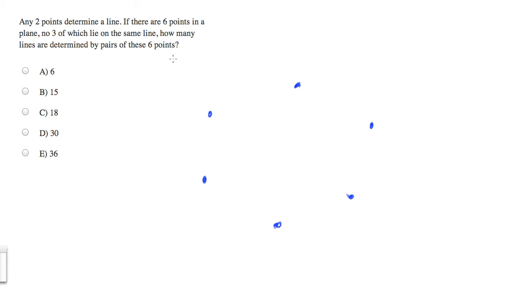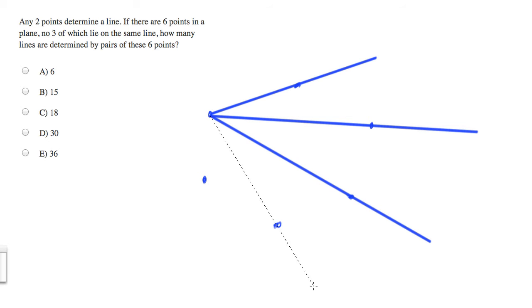And how many lines are determined by pairs of the six points? So I'm just simply going to start drawing lines and counting. One, two, three, four, five. And you can tell I'm being a little systematic here. I'm drawing all these lines from the same point.